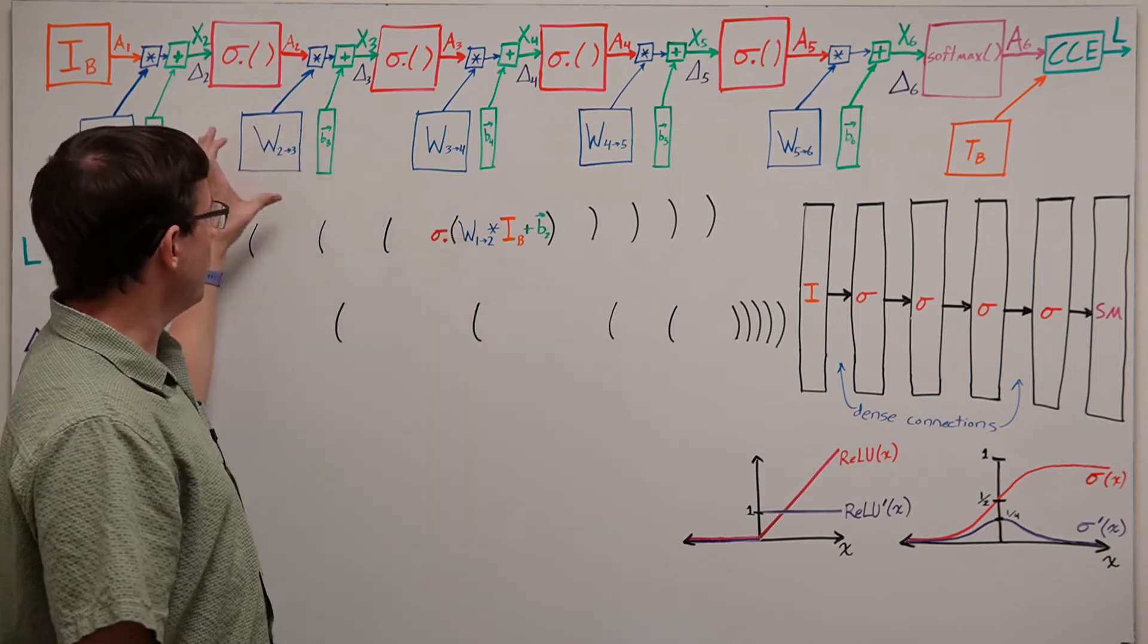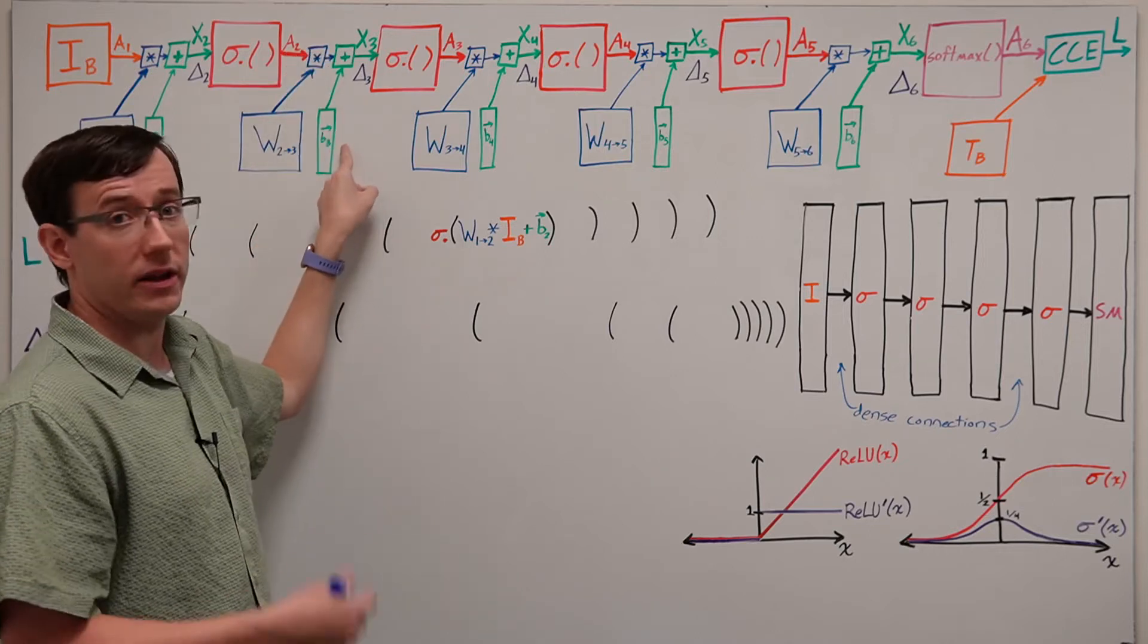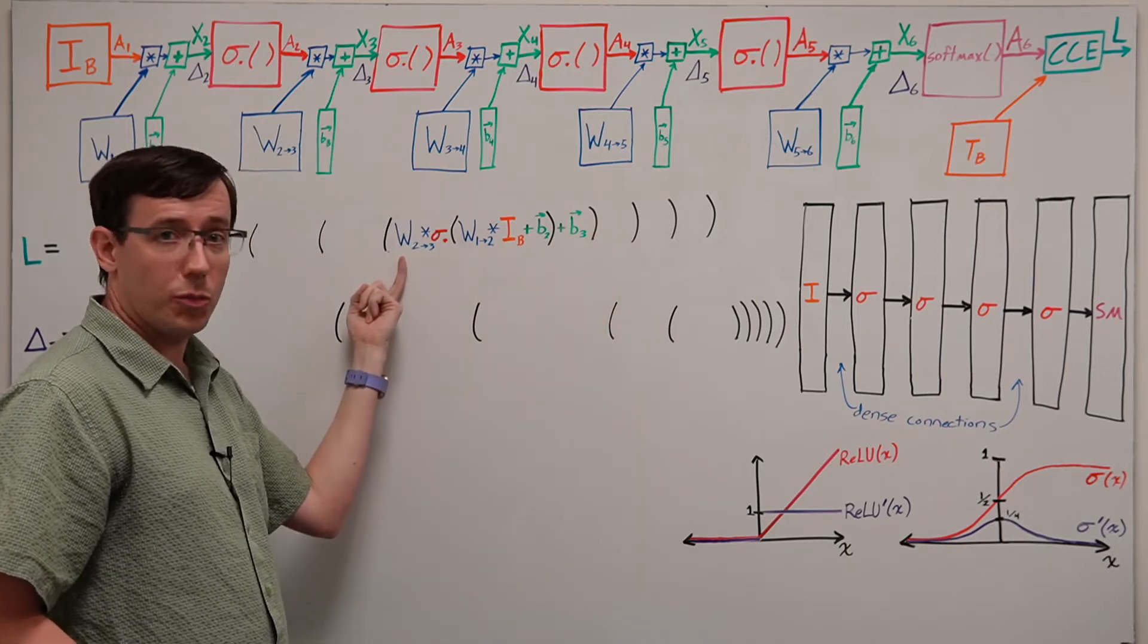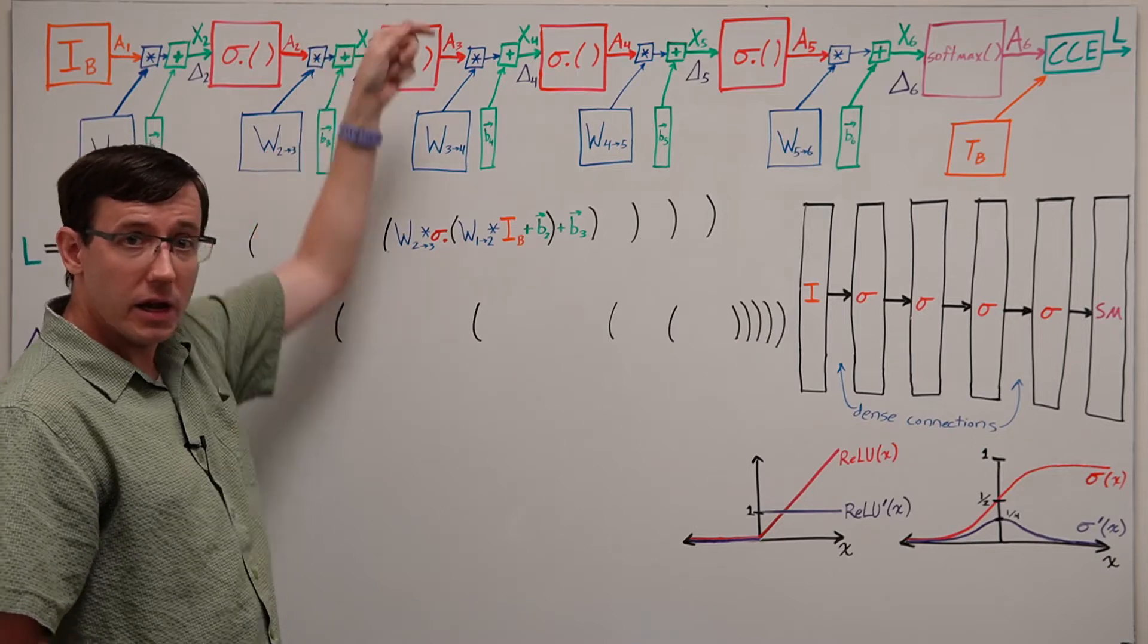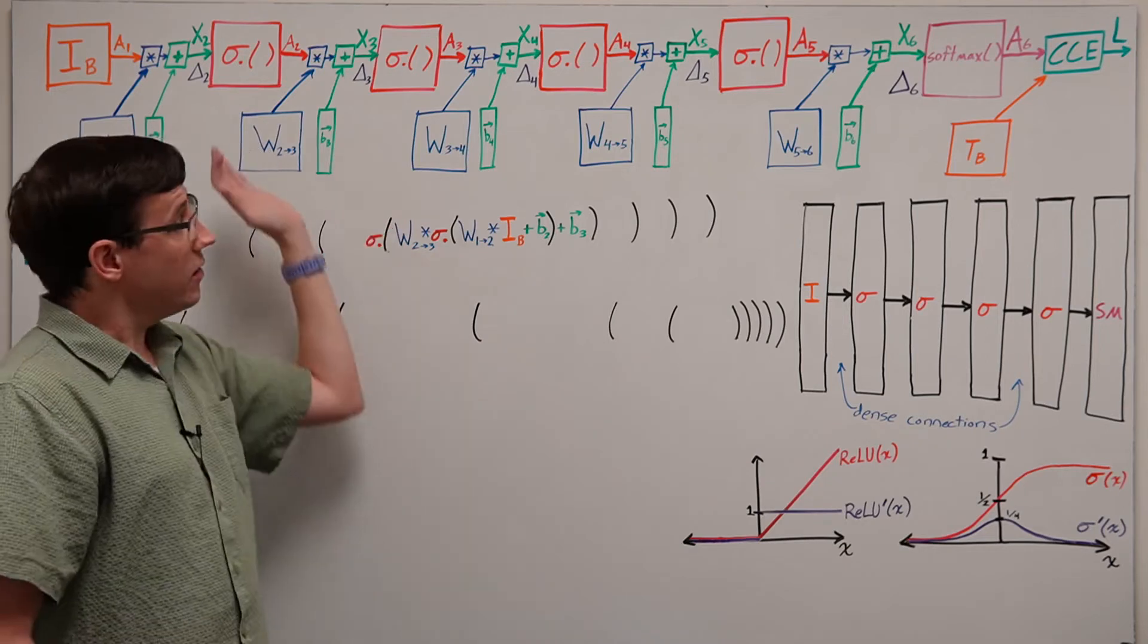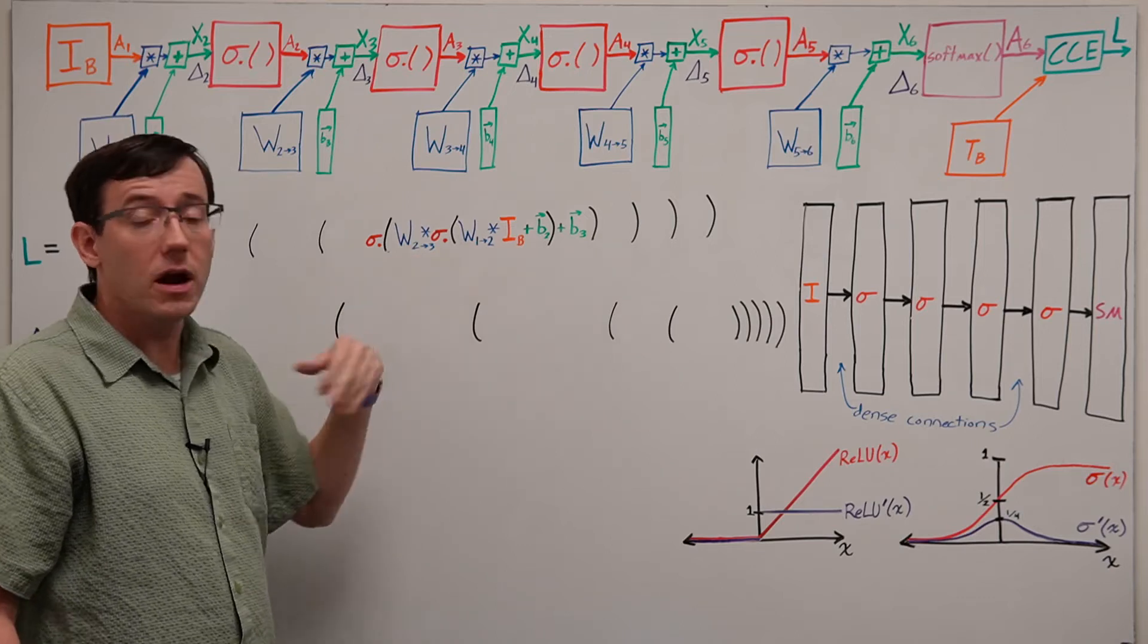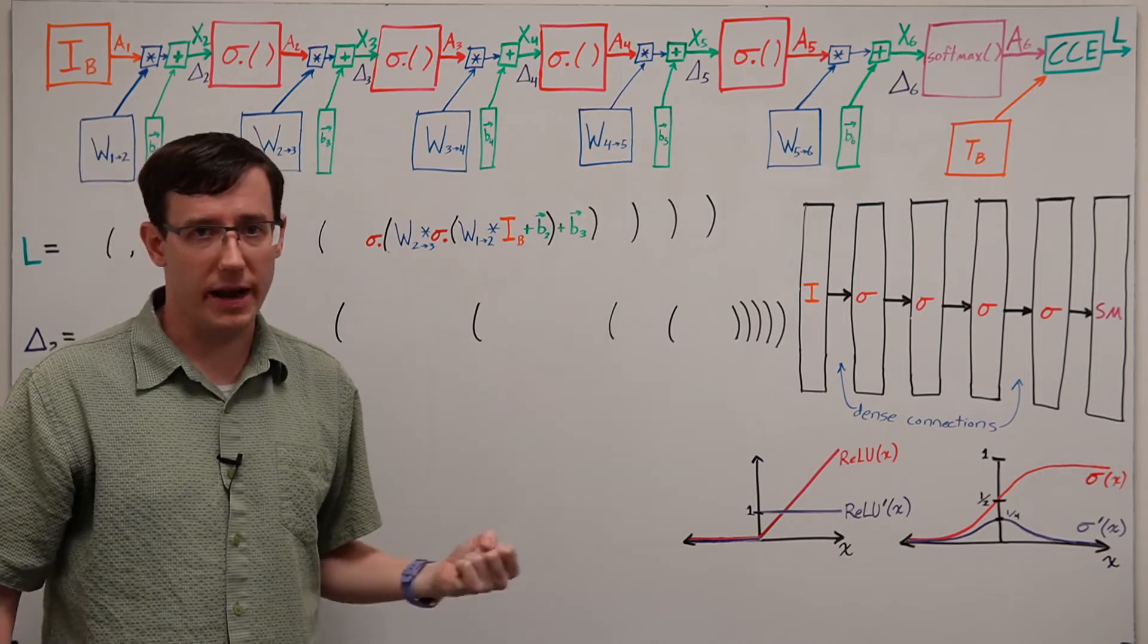Those activations then get multiplied by the weights from layer 2 to 3, and we add the layer 3 bias. And this is now an expression for computing the inputs to layer 3 to which we again apply a sigmoid activation function. And this proceeds through the hidden layers each time the output of one hidden layer gets multiplied by the weight matrix and we add the bias and that becomes the input to the next.